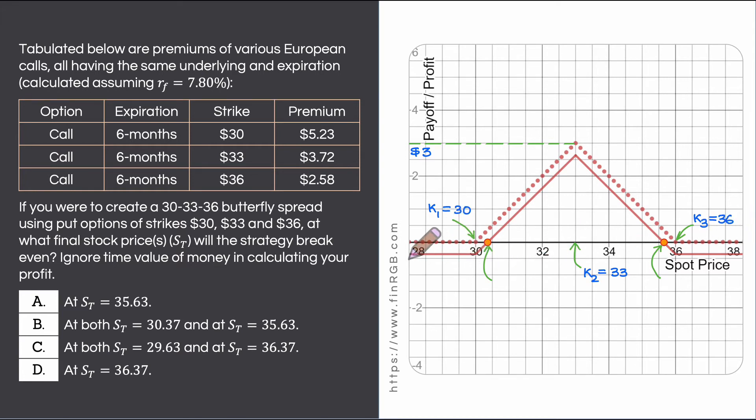To get the plot for the profit as a function of S sub t, just take the plot for the payoff and vertically pull it downwards by the cost of this strategy and that we know is 37 cents.